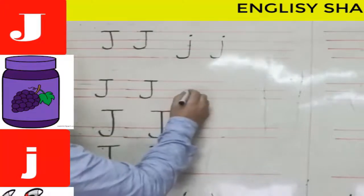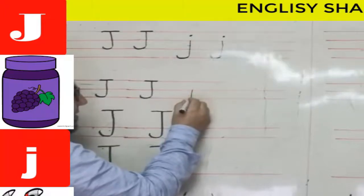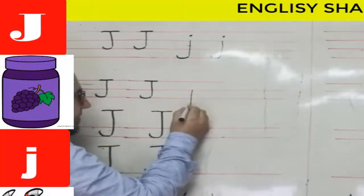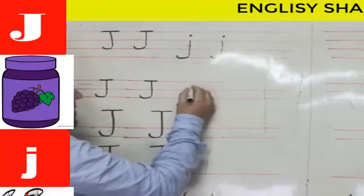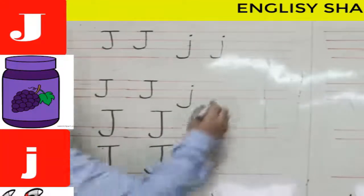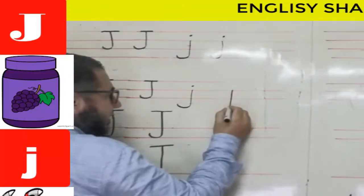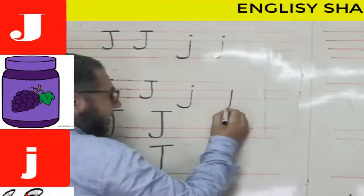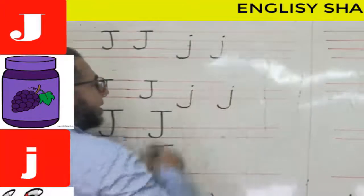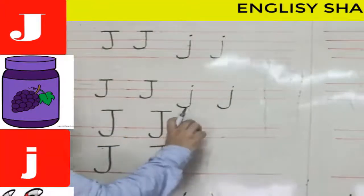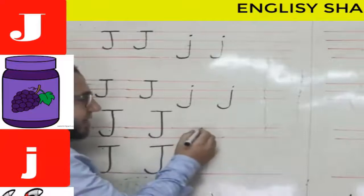When writing lowercase j on three lines, I start at the second line, go down to the third line, curve at the bottom, and put a dot. Again: start at the second line, go down the third line, curve at the bottom, then a dot.